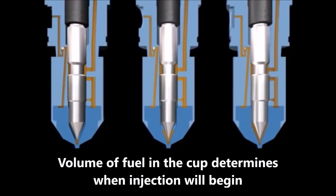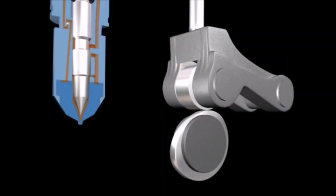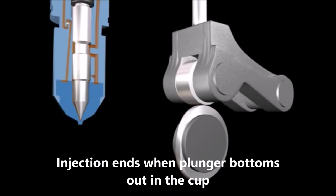With an increased fuel level, the injector plunger contacts the fuel earlier, thus advancing the beginning of injection. Fuel will be injected when the pressure exerted on the fuel by the downward movement of the injector plunger exceeds combustion chamber pressures. Injection ends when the plunger bottoms in the cup.